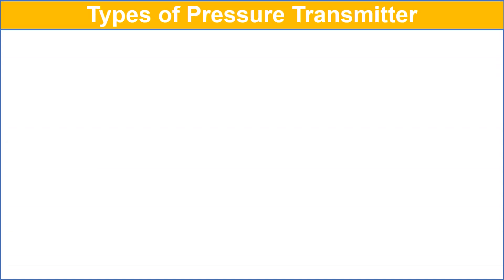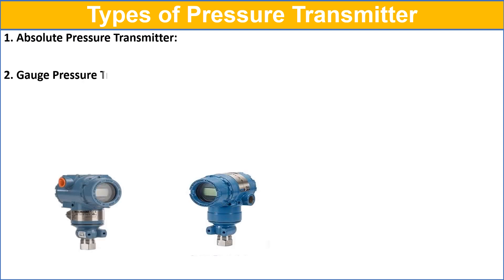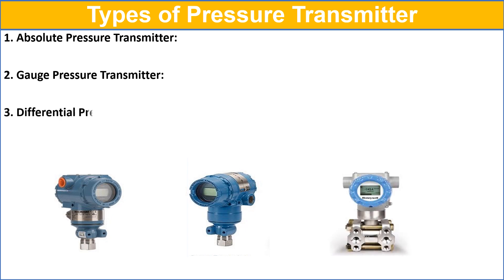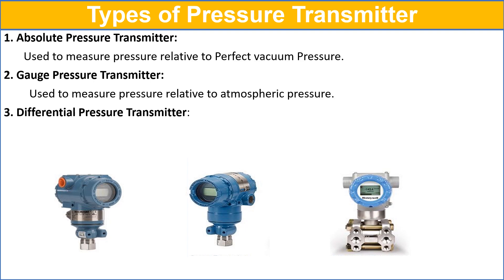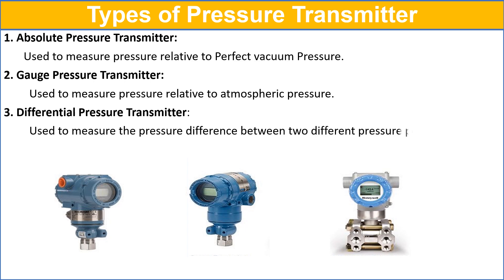There are three types of pressure transmitter: absolute pressure transmitter, gauge pressure transmitter, and differential pressure transmitter. The absolute pressure transmitter measures pressure relative to perfect vacuum. The gauge pressure transmitter measures pressure relative to atmospheric pressure — when it reads 0 psi, that means 0 psi is atmospheric pressure. The differential pressure transmitter measures pressure difference between two different pressure points.